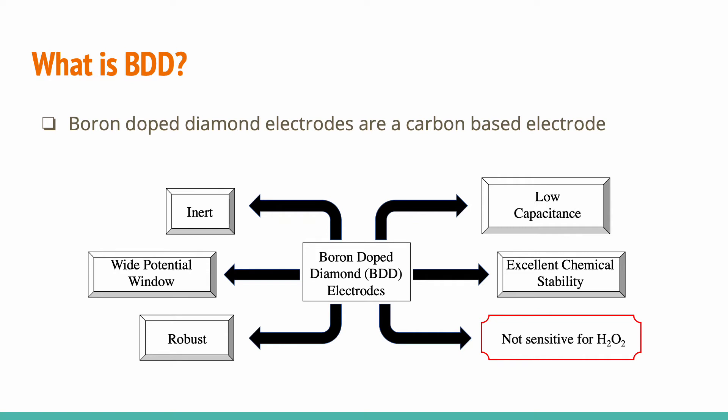What are boron-doped diamond electrodes? Boron-doped diamond electrodes are a carbon-based electrode. They are inert, have a wide potential window so we can apply a wide range of voltages, are robust, and have a low capacitance or low background current. They have excellent chemical stability, so they are less prone to fouling in biological systems. However, they are not very sensitive for hydrogen peroxide, and in order to overcome that obstacle, we decided to modify the electrode with platinum and palladium nanoparticles to make the boron-doped diamond electrode more sensitive to hydrogen peroxide.